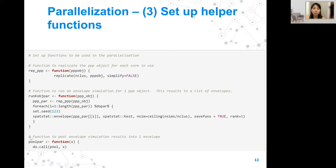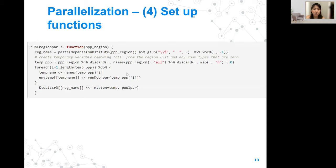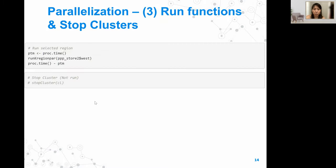Finally, there's a function to pool the envelope simulation results into one envelope, using do.call pool on the result list. We combine everything into one main function, which — given a PPP object with a region name and different room types — runs the analysis for all of them. Once done, we run the function and then stop the clusters.